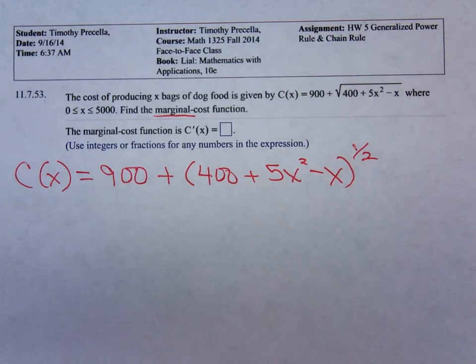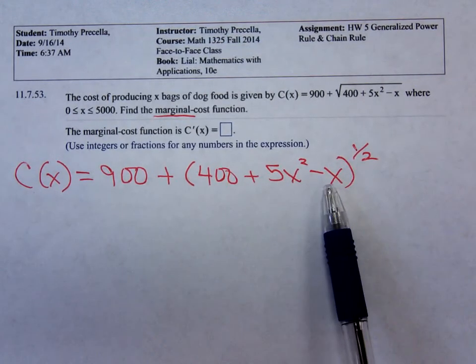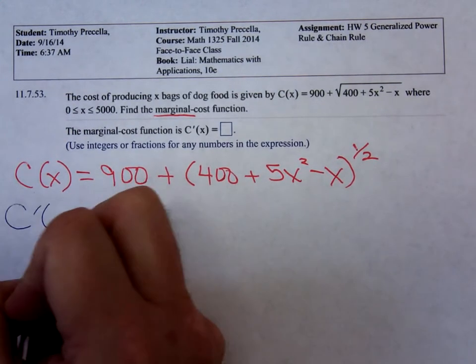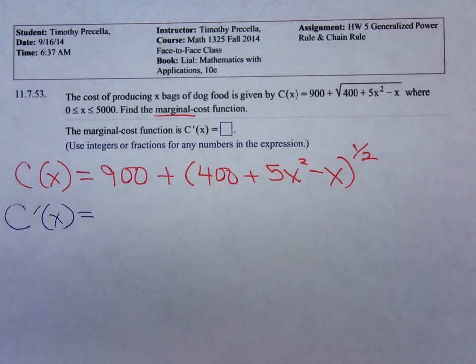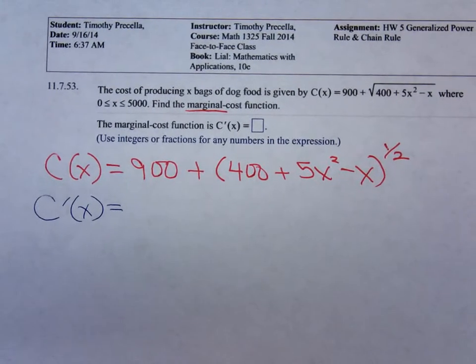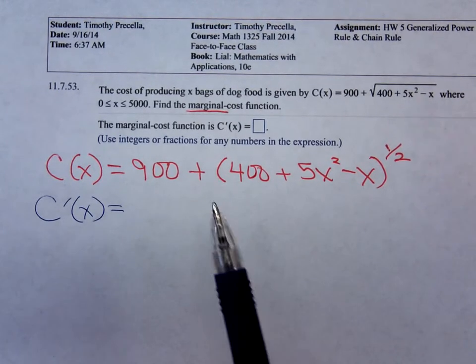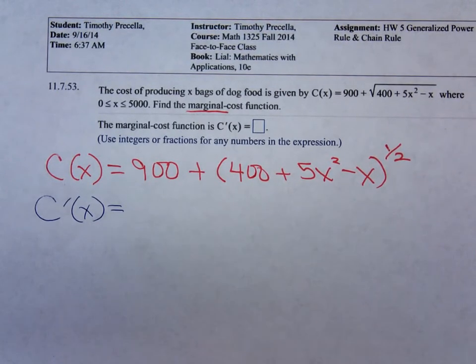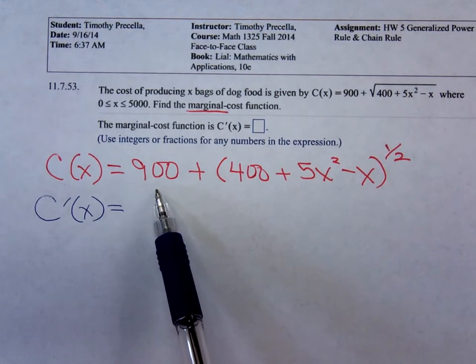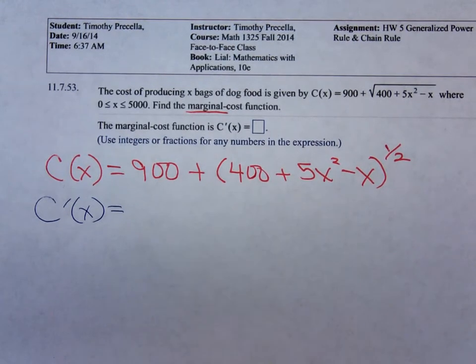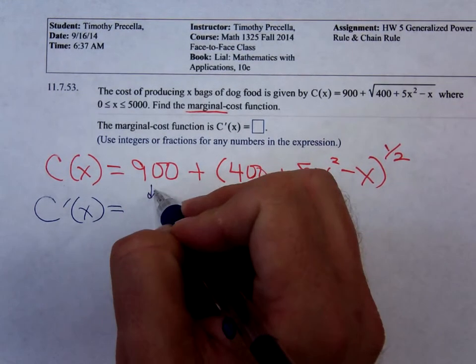And we have a quantity raised to a power, so definitely we will need to use the generalized power rule differentiating C'(x). Let me move that over a little bit. C'(x) - we have a sum. To differentiate a sum we find the derivative of each of the terms. The derivative of 900 is just zero. So that 900 has gone to zero. That's nice.